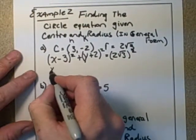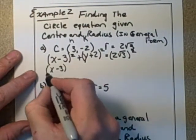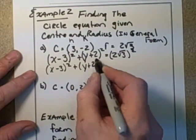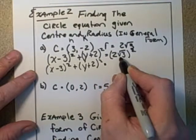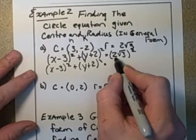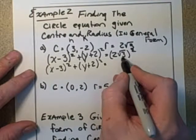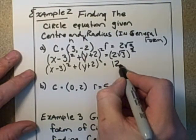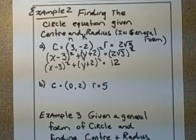So I've got (x-3)² + (y+2)² equals... the square of this is 4. Square of 2 times 2 is 4, times √3 times √3 is 3. So 4 times 3 is 12.